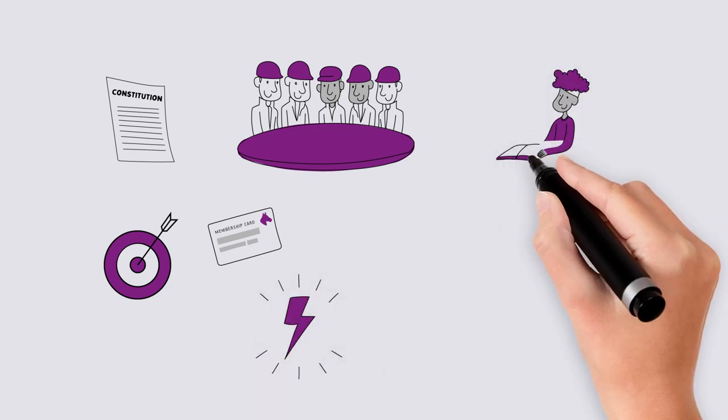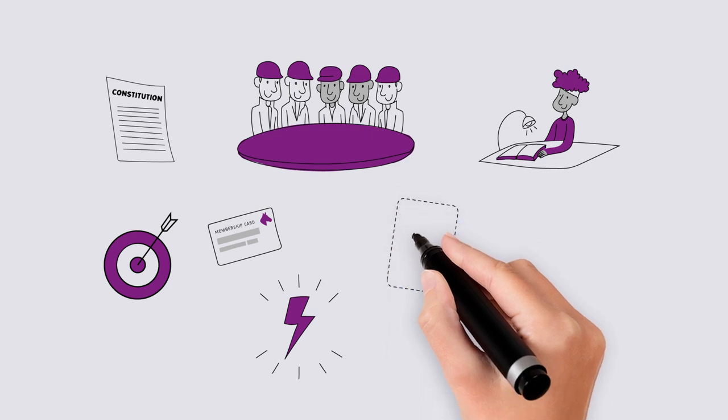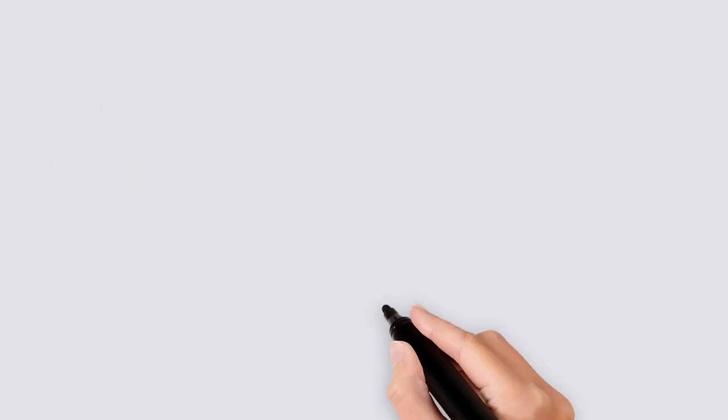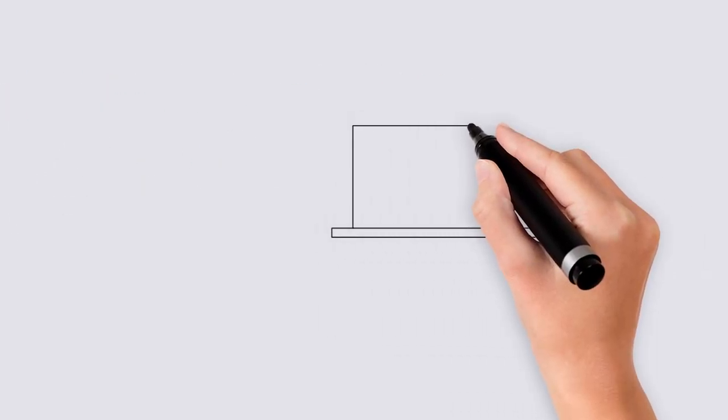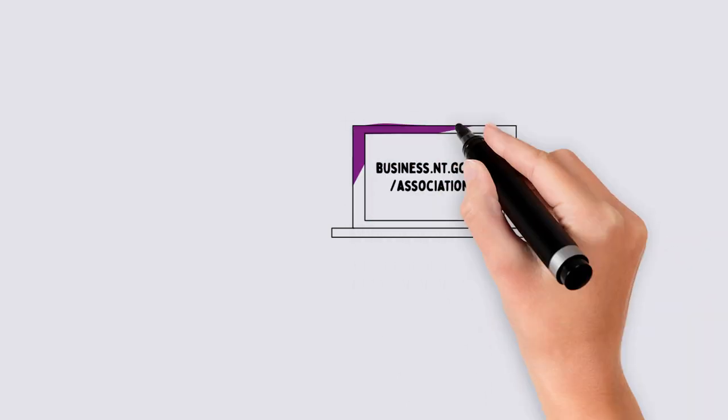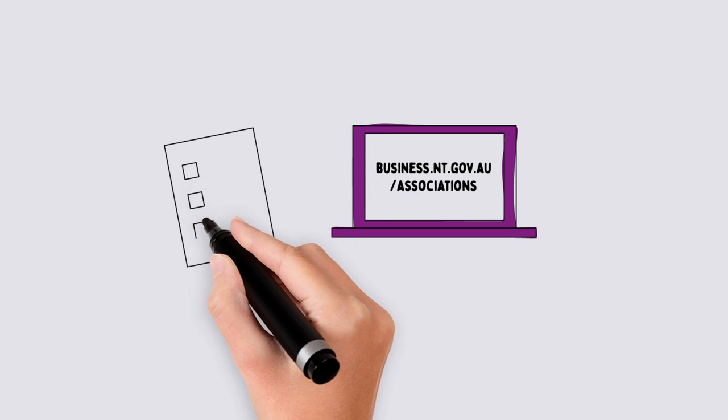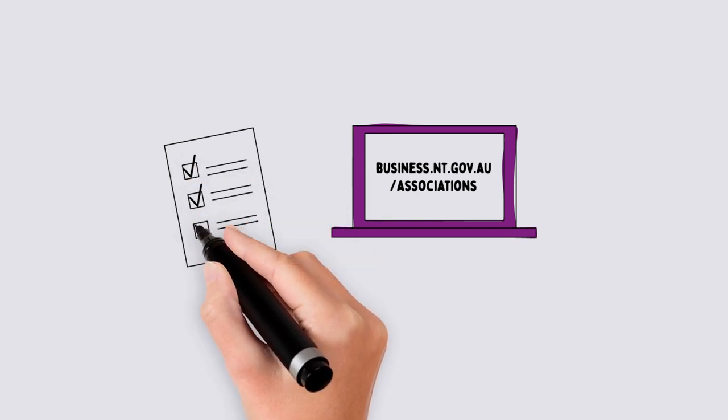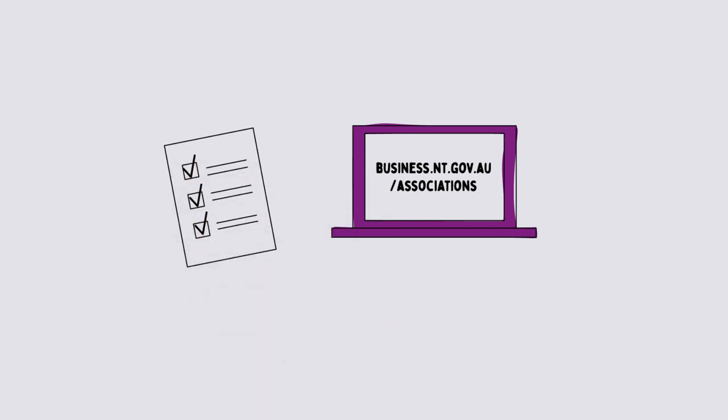You can write your own constitution or you can choose to use the model constitution. The model constitution is located on the NT Government Association's Compliance Team website. This document has been written to satisfy the requirements of the legislation and to make it easier for you to identify how you would like to operate.